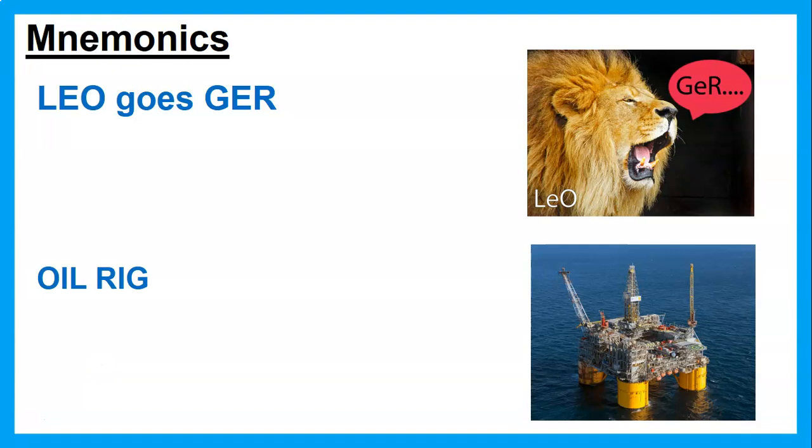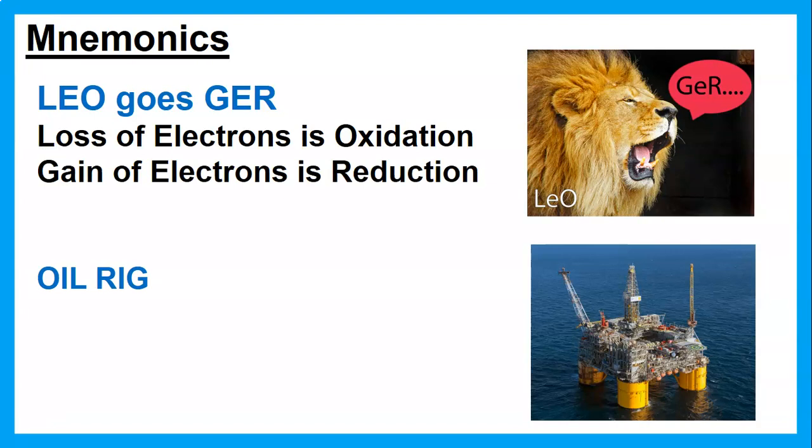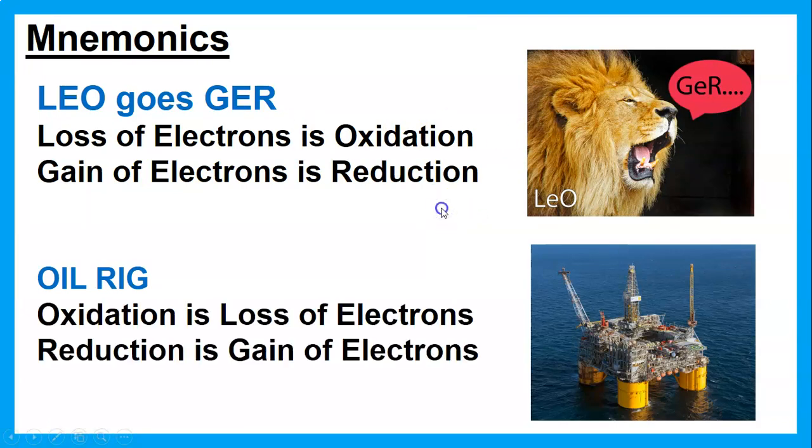So first a couple of mnemonics. These mnemonics are going to cover the same thing. It's just a personal preference which one you prefer. I was always taught Leo goes ger so that's the one I tend to use. But if you prefer to use oil rig, feel free. Even after all these years I still sketch Leo goes ger up the top of my worksheet when I go to do something because it is so easy to get these terms backwards and if you get them backwards you can't do much this chapter. So if you need to jot it down on your paper you do that.